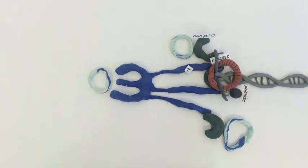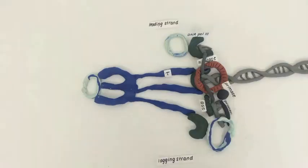First, the helicase enzyme unwinds the DNA, creating a Y shape which is called the replication fork.